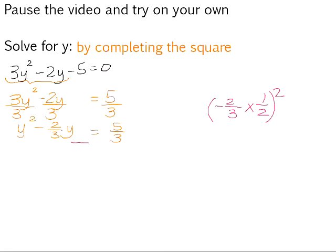Negative 2 thirds multiplied by a half is, we can simplify here. 2 goes into 2 ones and into 2 ones. So we've got negative 1 third, and negative 1 third squared is positive 1 ninth.